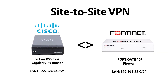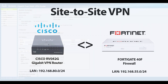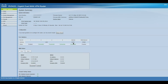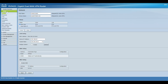Hello all, today we'll have a configuration video of Cisco RV series VPN router to a FortiGate firewall. Let's get into the video. First we'll configure the Cisco side — we are already logged into the Cisco console.